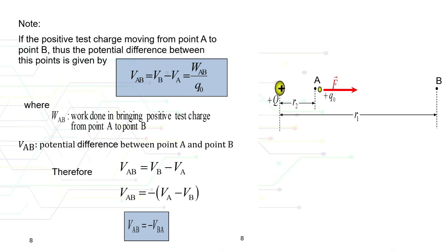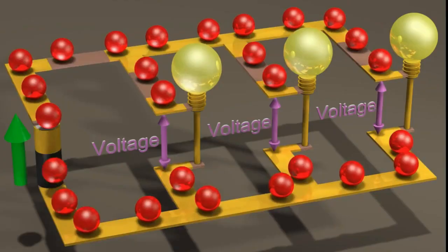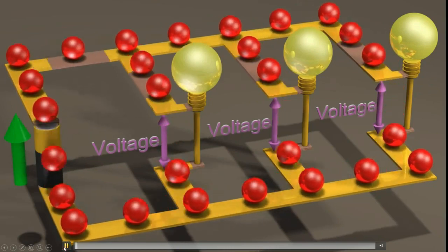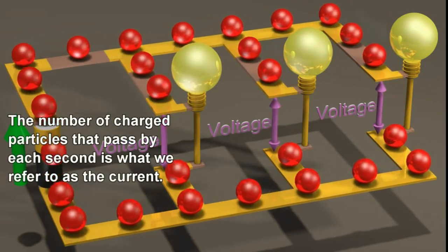We now reach the last part of this chapter, where we will briefly discuss the potential energy, equipotential lines and surfaces, and isolated charges in a uniform electric field. To help students understand these concepts, let's look at a video. The number of particles that pass by each second is what we refer to as current.